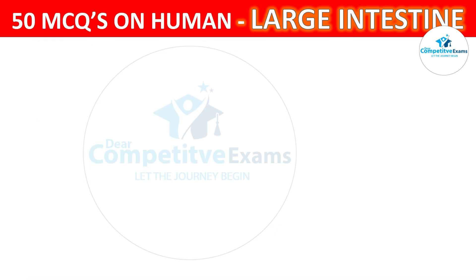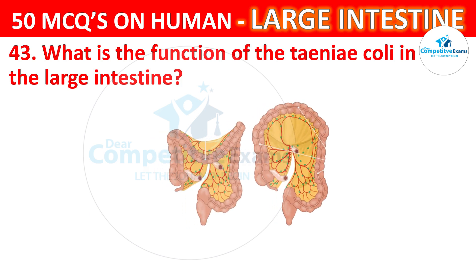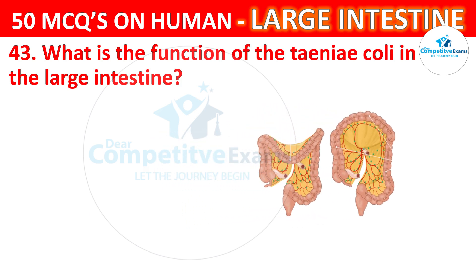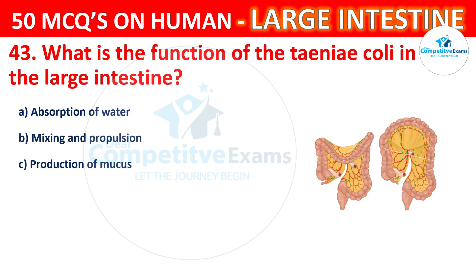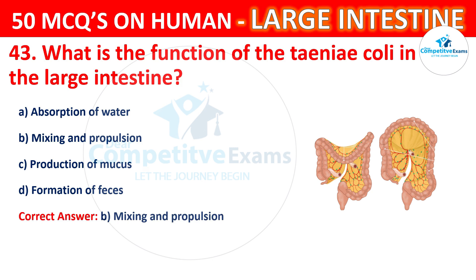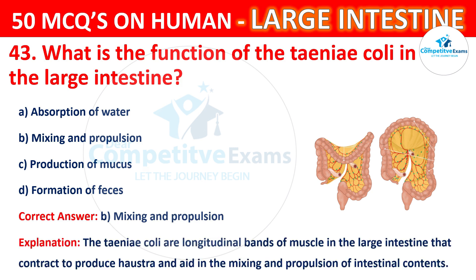Question number 43. What is the function of the taenia coli in the large intestine? Your options are Absorption of water, Mixing and propulsion, Production of mucus, or Formation of feces. The correct answer is B, that is Mixing and propulsion. The taenia coli are longitudinal bands of muscle in the large intestine that contract to produce haustra and aid in the mixing and propulsion of intestinal contents.